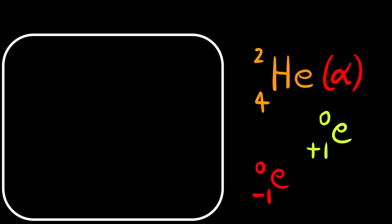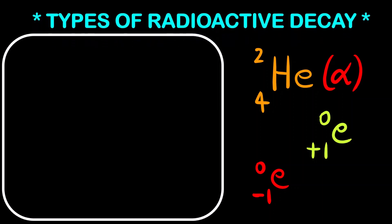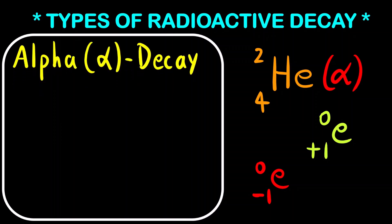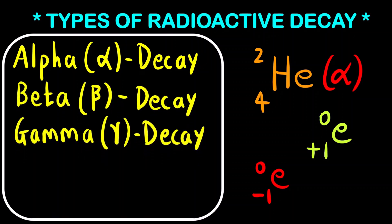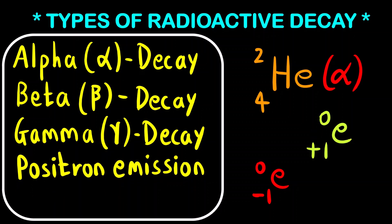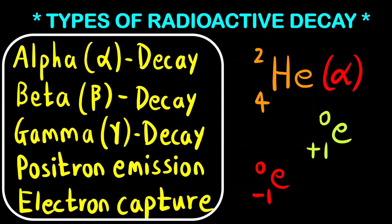Hello everyone. Welcome to Chemezon Complete Chemistry. In today's video we are going to learn about what are the different types of radioactive decay — that is what happens to the atomic number and mass number during alpha decay, beta decay, gamma decay, positron emission and electron capture.